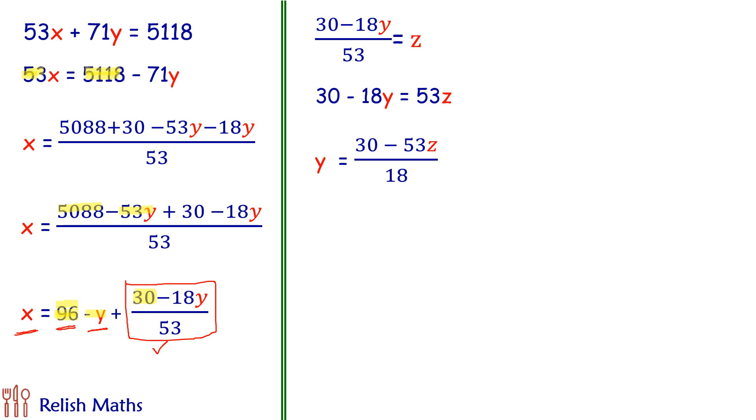Again, we will divide 30 by 18 and 53 by 18 and see what is quotient and what is remainder. So I have divided, I have split 30 as 18 plus 12 and 53 as 36 and 17. So keeping 18 and 36 on one side and remaining on the other.